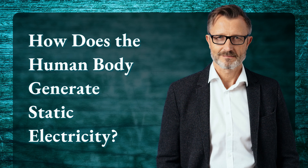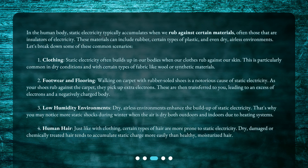How does the human body generate static electricity? In the human body, static electricity typically accumulates when we rub against certain materials, often those that are insulators of electricity. These materials can include rubber, certain types of plastic, and even dry, airless environments. Let's break down some of these common scenarios.